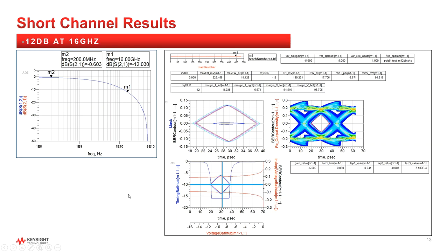Short channel at minus 12 dB, as expected, has a good eye opening. The table at the lower right provides a summary of DC gain values and DFE taps.